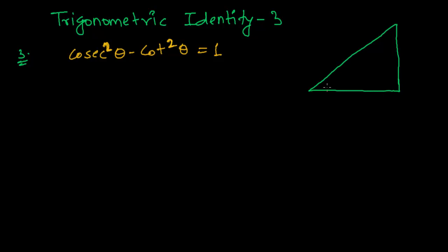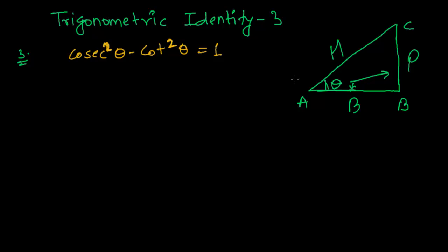This is my right angle triangle with angle theta. Let me name this A, B, and C. Since I have taken theta, the opposite side is always the perpendicular, the side in which theta is seated — that is side AB — is the base, and the longest part is always the hypotenuse.